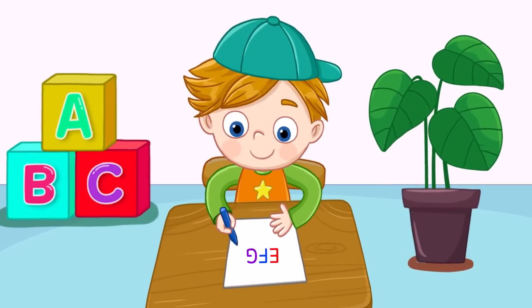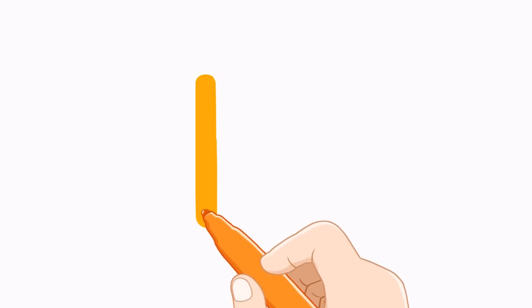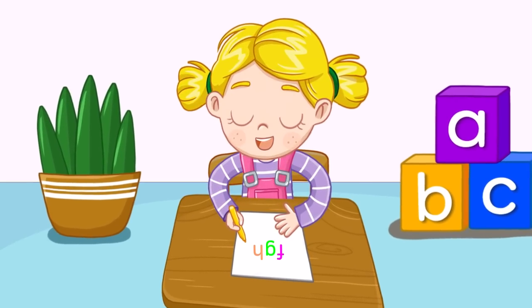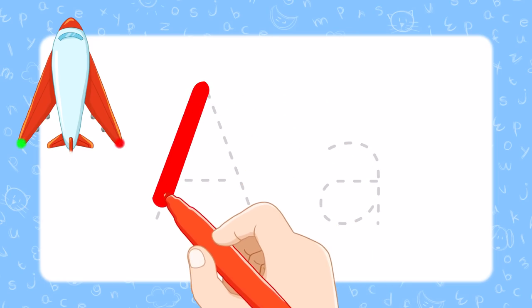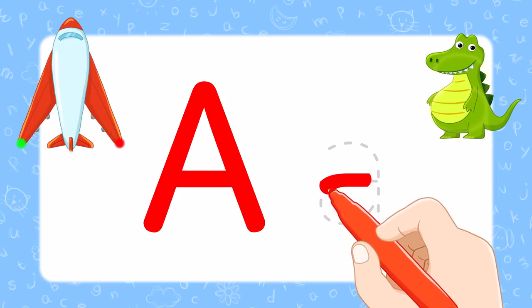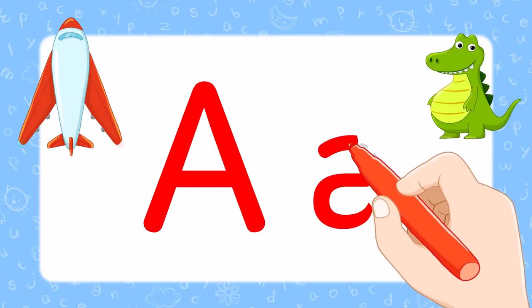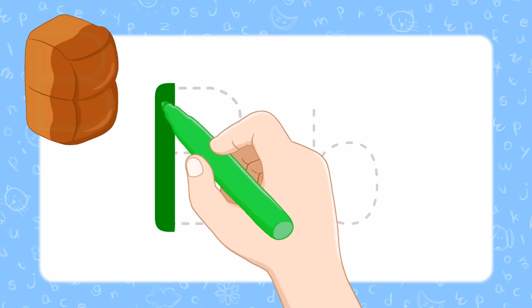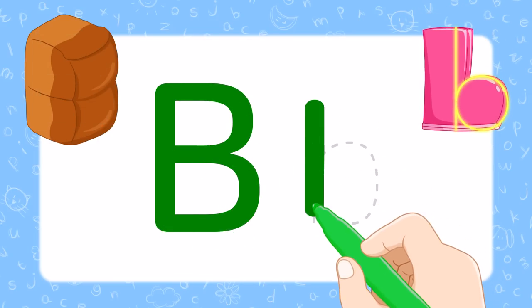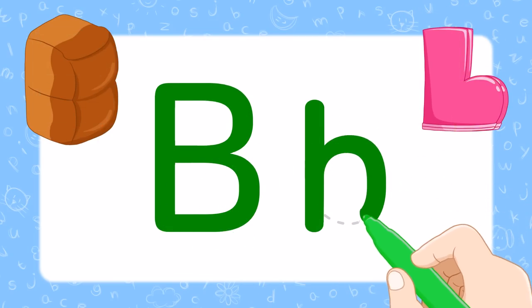Let's learn our ABCs. A, Triangular Airplane A, All Fat Alligator A. B, Standing Bread B, Knee High Boots B.